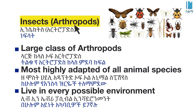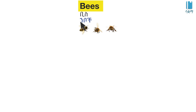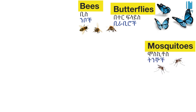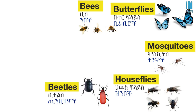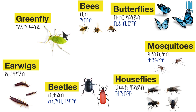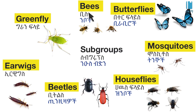Insects belong to the phylum Arthropoda. They live in every possible environment. Examples include bees, butterflies, mosquitoes, houseflies, beetles, earwigs, and greenfly — found across all types of habitats.